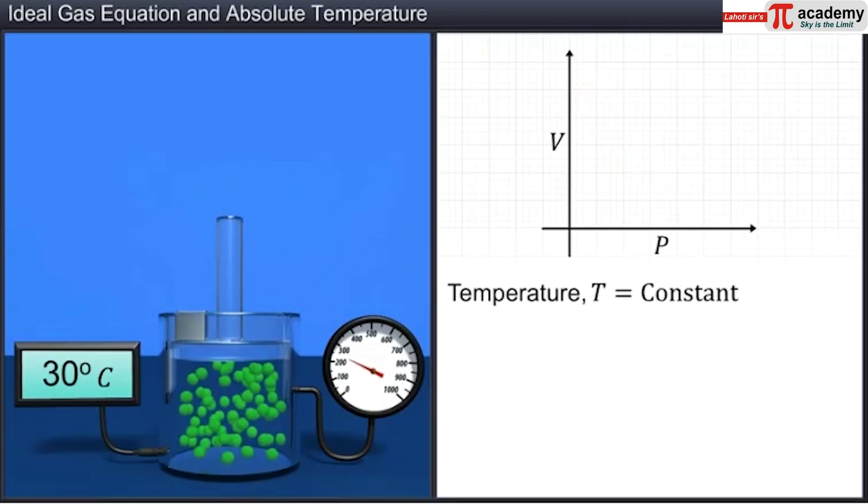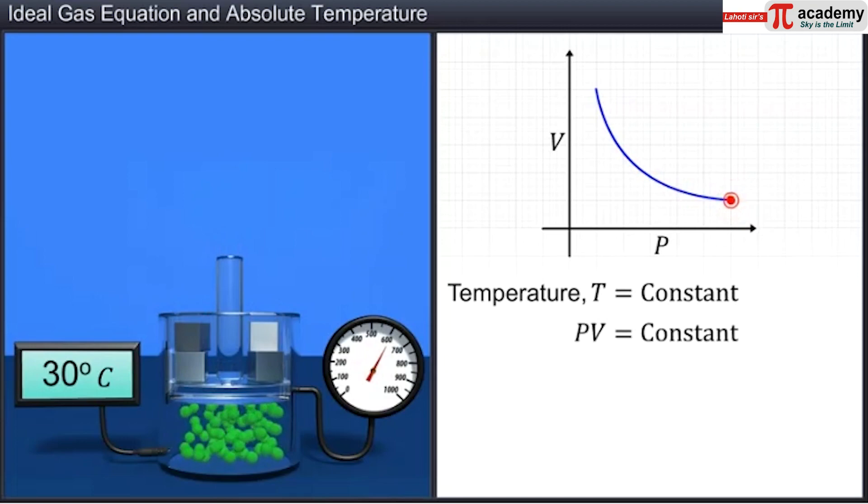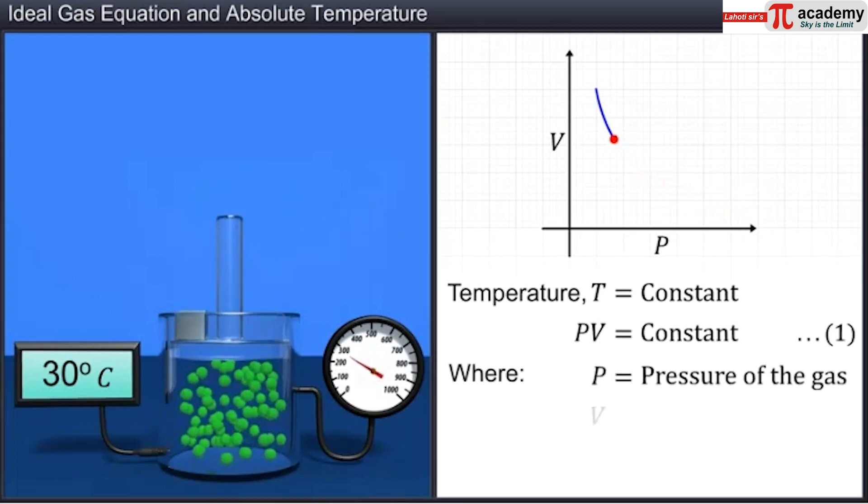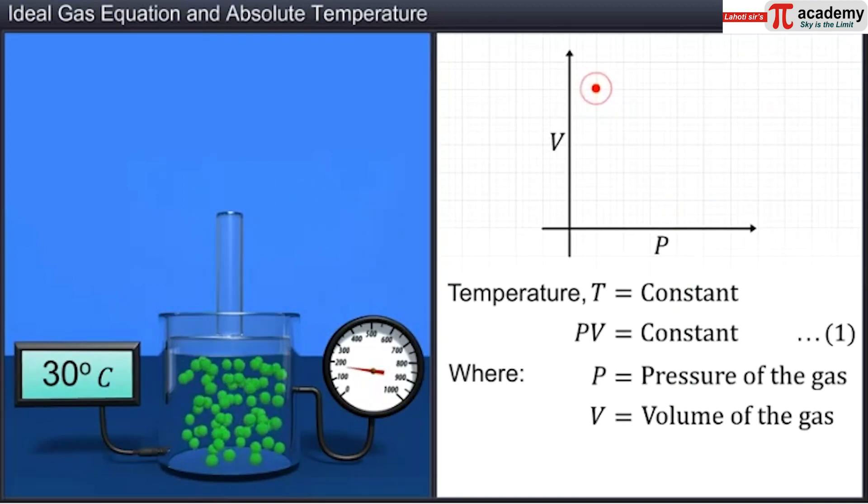At constant temperature T, PV is equal to constant, where P is the pressure of the gas and V is the volume of the gas.